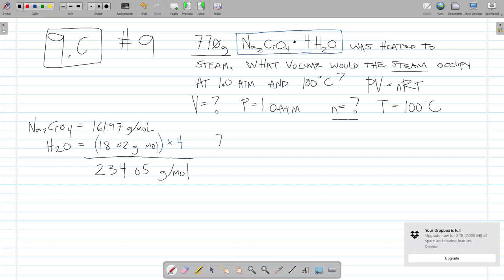If I have 7.7 grams and the molar mass of my compound is 234.05 grams per mole, we have 0.03289 moles. I'm going to calculate the moles of this compound, Na2CrO4·4H2O.